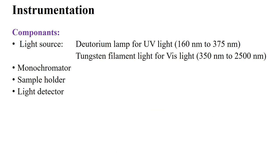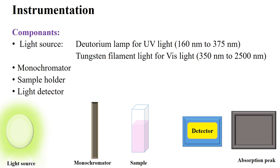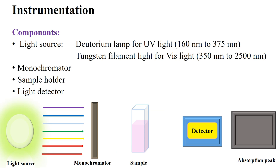For the instrumentation of UV spectrophotometry: you need a UV light source — a deuterium lamp is used for UV light and a tungsten filament lamp for visible light. A monochromator filters the radiation so that only a single specific wavelength passes through, removing all other wavelengths. You also need a sample holder to place the cuvette containing the sample.